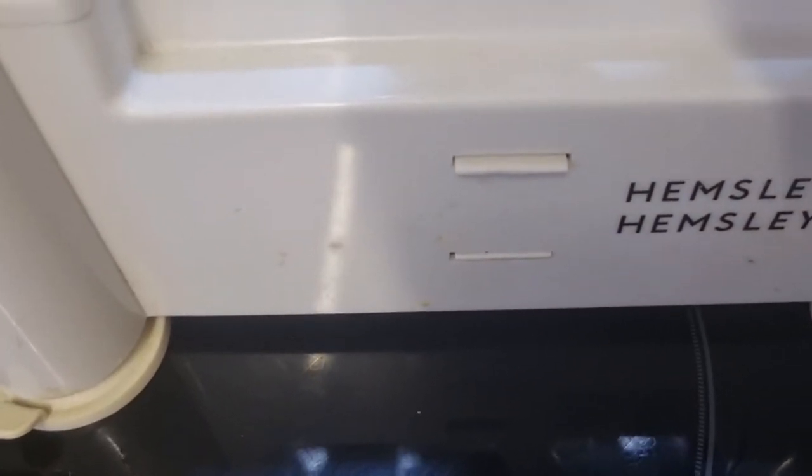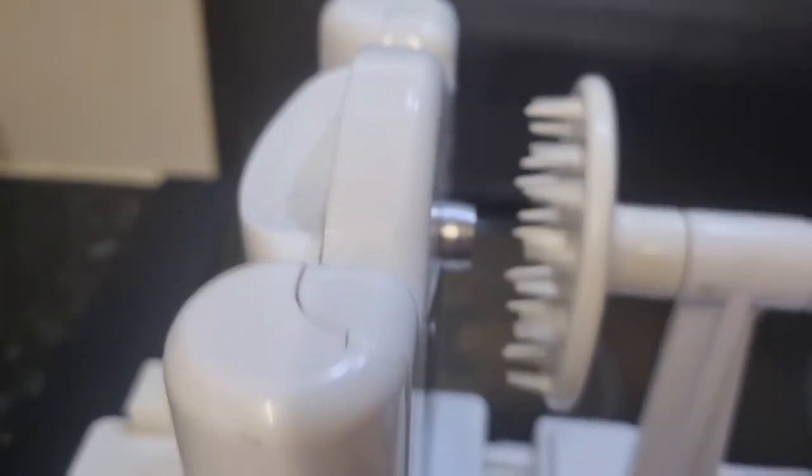And now on to a spiralizer. This one by Hemsley and Hemsley came with a lifetime guarantee. All you do, you put your fruit or veg on there, push up to there, and you twist. This comes with interchangeable blades so you can have thick slices like you'd have there, you can have these, and there's another, so there's three interchangeable blades. Nice and fine for carrots, it's really good for making a coleslaw.